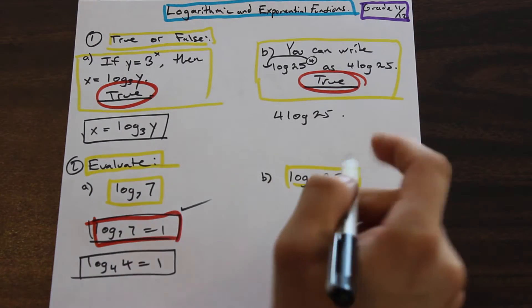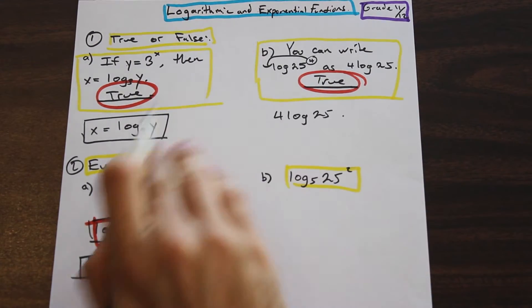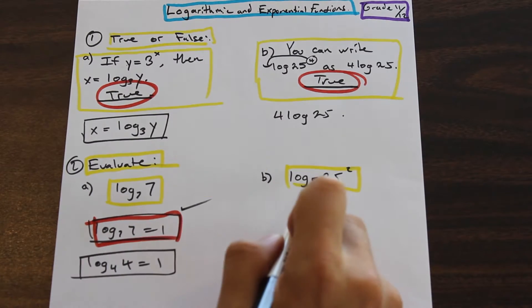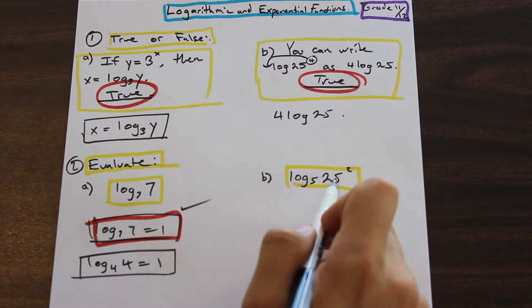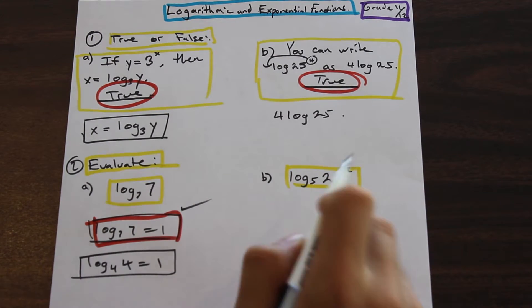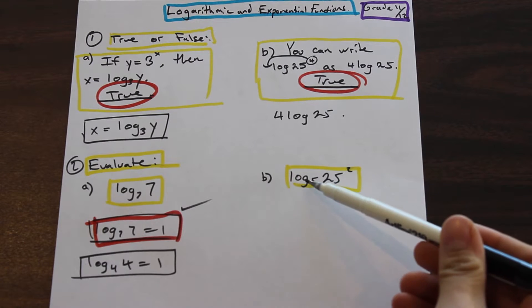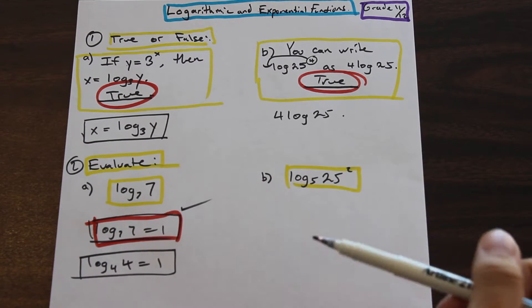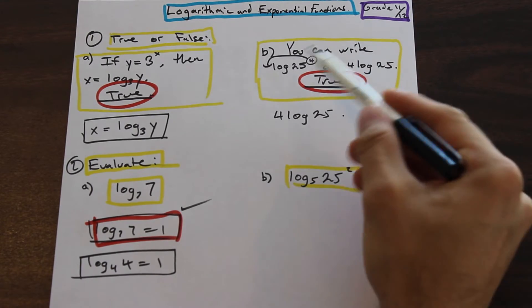All right. So let's go to the last one, a little bit trickier. So we're going to apply some of the rules that we learned in this question here. So we have log base five times 25 squared. In this case, we can't just plug this into our calculator, right? So we need to modify it a little bit in order to make it easier to deal with.